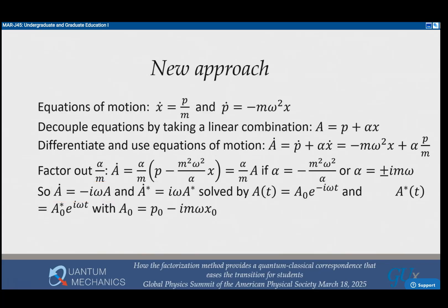It's a differential equation, but all you tell students is this is a function whose derivative is proportional to the function. They all know it's an exponential. So you can immediately solve that. You have two of them, one for A and one for A star. They're solved by the same constant A zero E to the minus i omega T, where A zero is just P zero the initial momentum minus i M omega X zero, coming from how we define A.